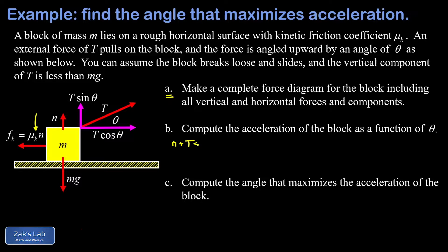I have n plus T sin theta—those are my upward forces—balanced by the downward forces which is just mg. This is what I mean by a component of tension helping out the normal force to balance mg, and that makes n smaller than mg. So I can write n equals mg minus T sin theta.